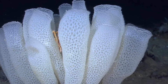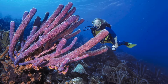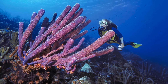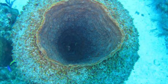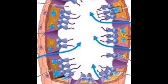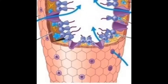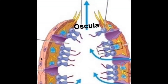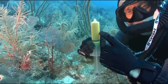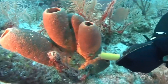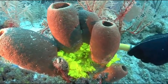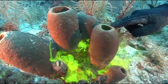Sponges do not move at all. They are sessile creatures, so they rely on water flow for their survival. Reproduction and obtaining food all comes from water flow. Water flows into a sponge with the help of porocytes and ostia, which are holes in a porocyte that allow water to flow in, where it is moved along through the spongocoel with the help of choanocytes, and then it leaves through the large opening or openings called the oscula or osculum.